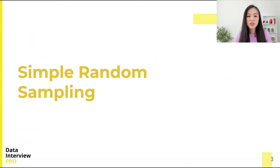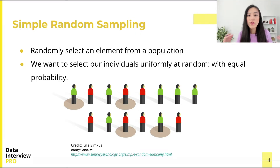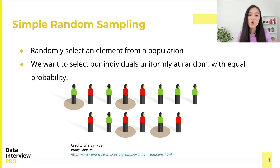The first method is simple random sampling. As simple as it may sound, we just randomly select an element from a population. We want to make sure that we do not favor any individual in the population when selecting elements — that is, we want to select our individuals uniformly at random, with equal probability.